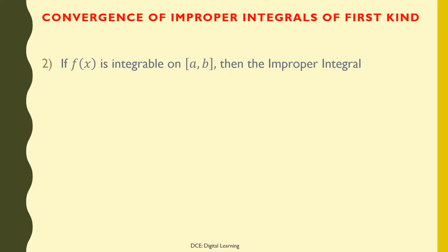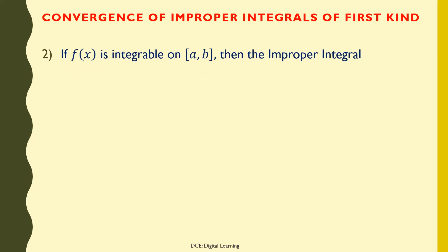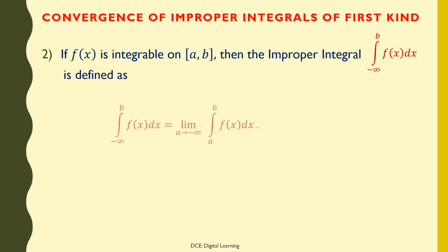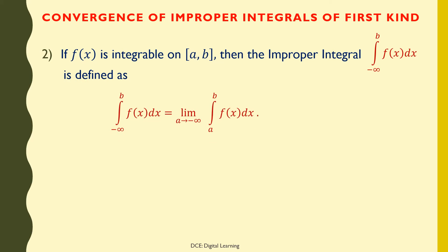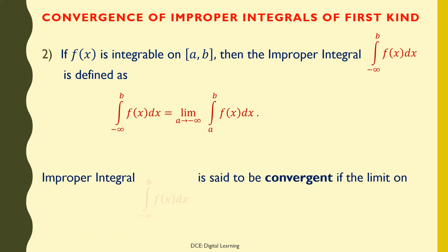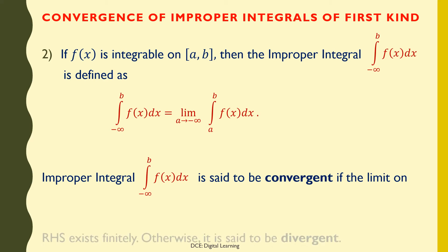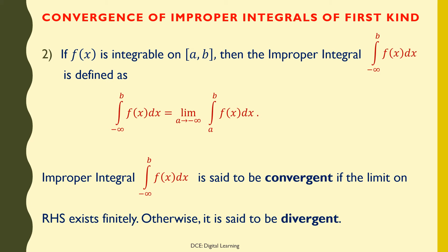If f(x) is integrable on [a,b] for all finite a, then the improper integral of f dx from minus infinity to b is defined as the limit of the integral of f dx from a to b as a tends to minus infinity. This improper integral is said to be convergent if the limit on the right-hand side exists finitely; otherwise, it is said to be divergent.